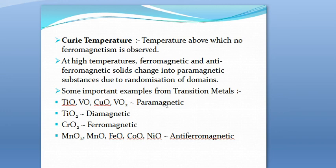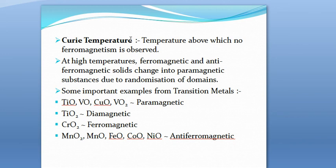Now, ferromagnetic substances remain magnetized even after the external magnetic field is removed, but there is a restriction of temperature. At very high temperatures, they stop acting as ferromagnetic and change into paramagnetic substances. This is because at very high temperatures, randomization of the domains takes place — the aligned domains become randomly oriented. The temperature above which no ferromagnetism is observed is called the Curie temperature.